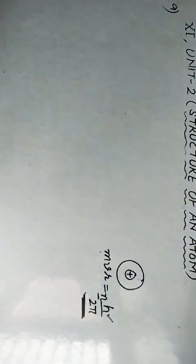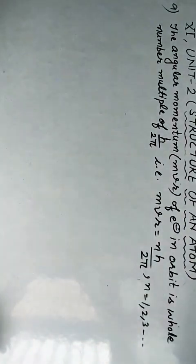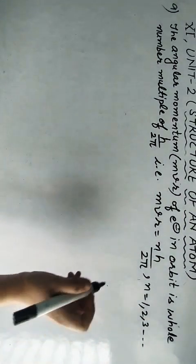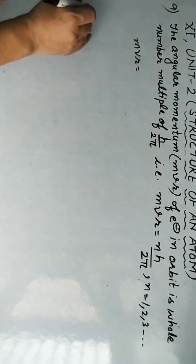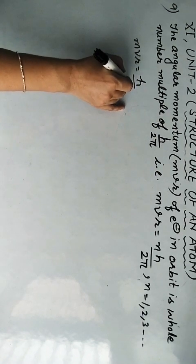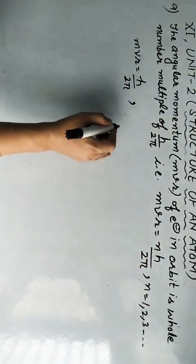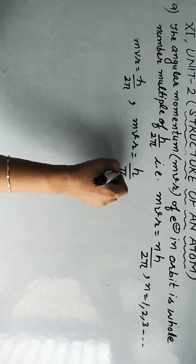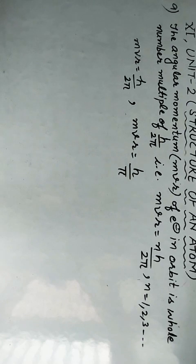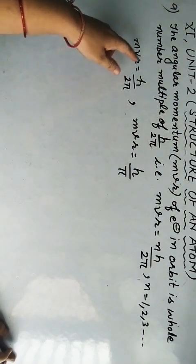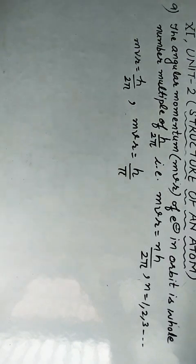Here N can be 1, 2, 3 or any integer. For the first shell, N = 1, so mvr = h/2π. For the second shell, N = 2, so mvr = h/π (the 2s cancel). This postulate introduces the concept of quantization of angular momentum — the angular momentum in a particular orbit is also quantized, or fixed.